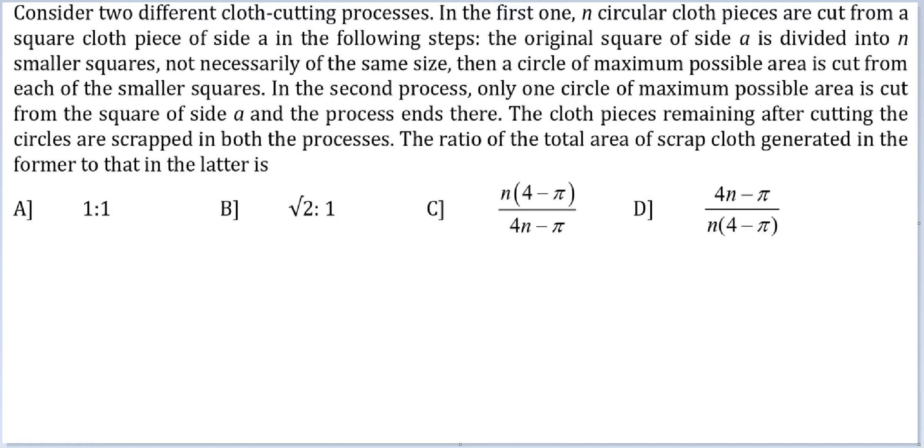The original square of side A is divided into n smaller squares, not necessarily of the same size. Then a circle of maximum possible area is cut from each of the smaller squares.